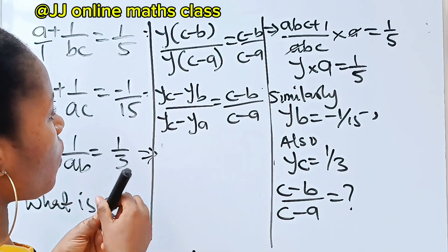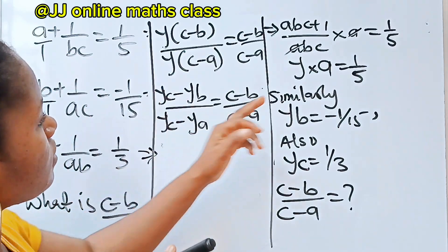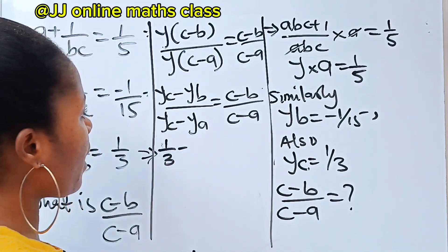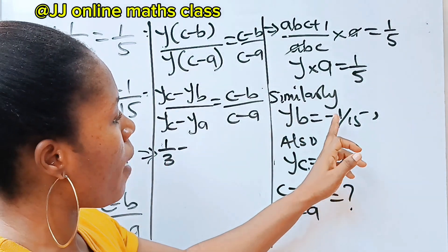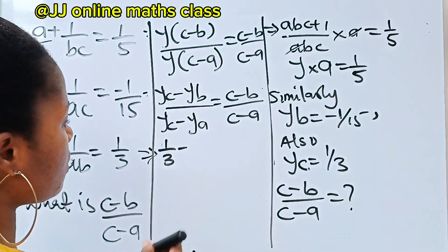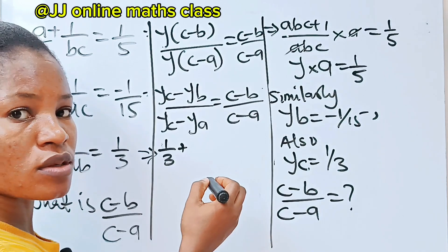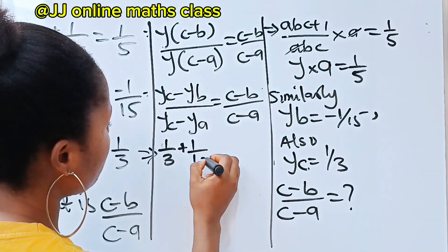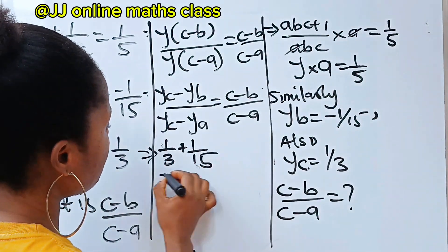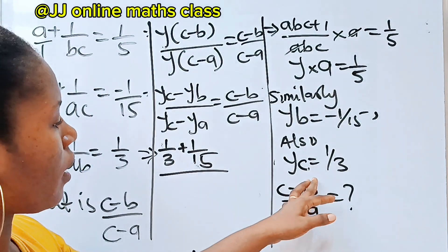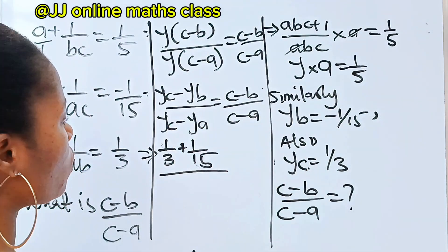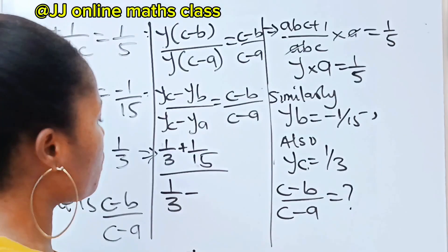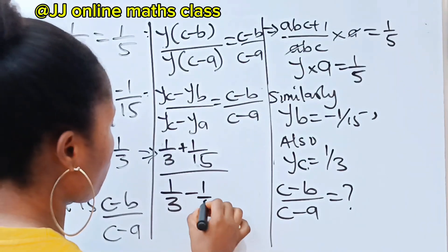Now it's time for substitution. Our yc is 1 over 3, so we have 1 over 3 minus yb. Our yb is minus 1 over 15, so that becomes plus 1 over 15. Divided by: yc is 1 over 3, minus ya. ya is 1 over 5.